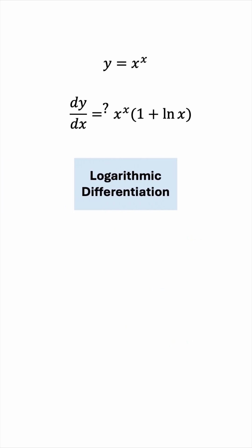We'll start with the equation y equals x to the x, and we'll take the natural log of both sides. Why are we doing that? Isn't this making the complication even worse?